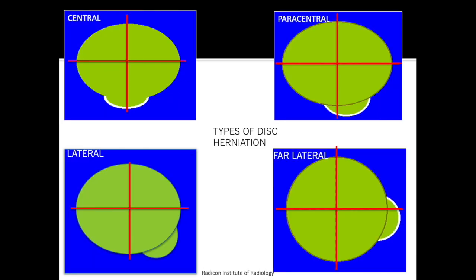Disc herniation can focally herniate in multiple directions. A central disc herniation is right in the midline, posteriorly into the thecal sac. If it is to either side of the midline, it is classified as a paracentral disc herniation. Just deep to the facet joints at the level of the foramen is called lateral disc herniation, and outside the exit foramen it is called far lateral disc herniation.